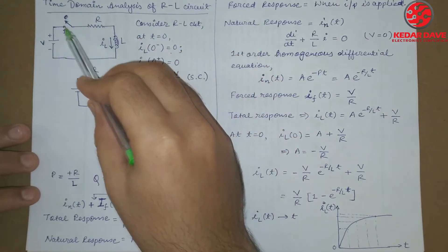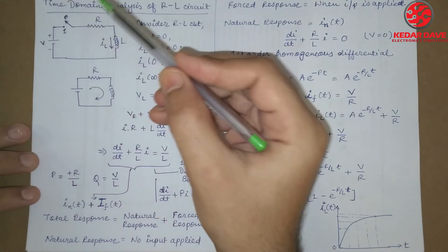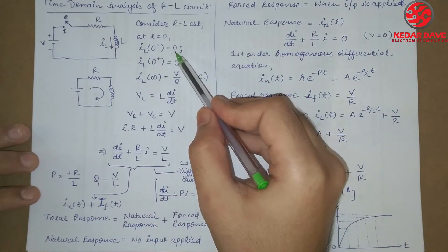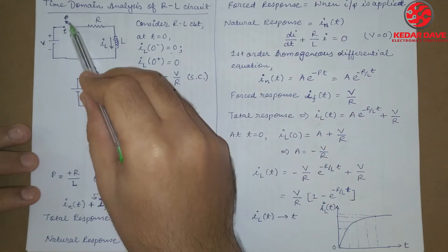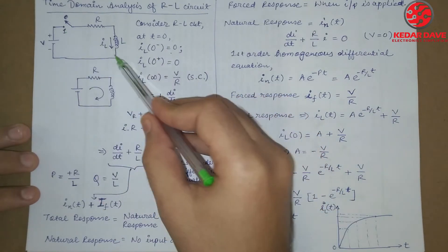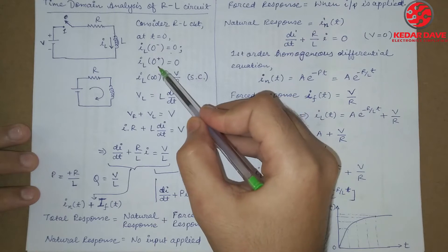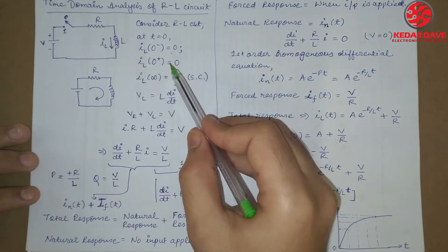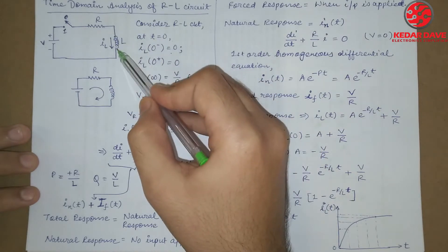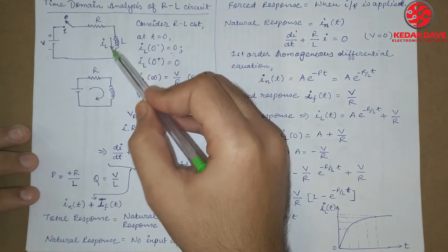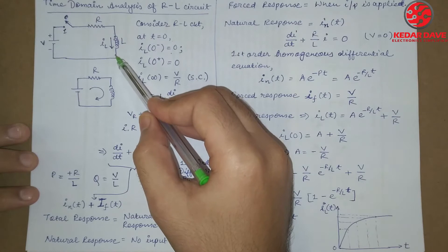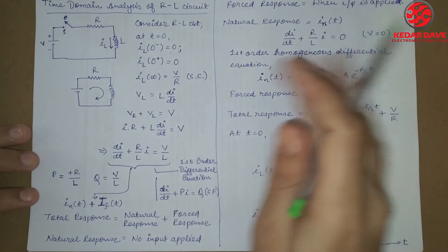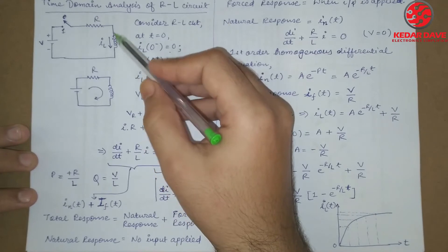So in the first few seconds, my current was zero. And just as I connected the switch, what is the current through? It is still zero. Why is it zero? Because the current through this inductor cannot suddenly rise — just like we had in the capacitor, it will take some time to charge up this inductor.